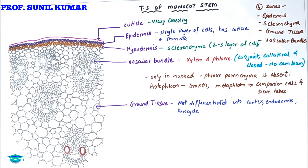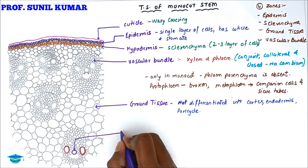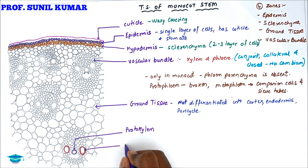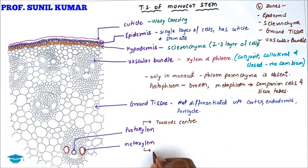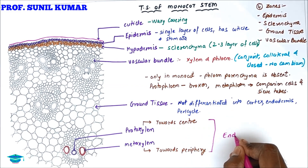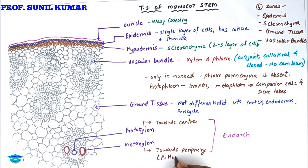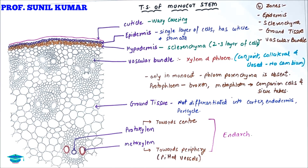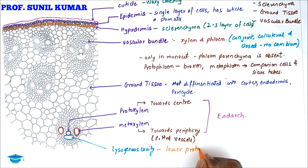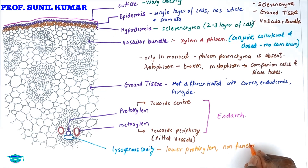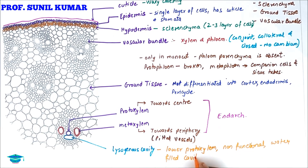The vascular bundle has a protoxylem and a metaxylem. Protoxylem is towards the center and metaxylem is towards the periphery. The metaxylem has pitted vessels, and this kind of arrangement is called the endarch condition — protoxylem towards center and metaxylem towards periphery. Below this there is a lysogenous cavity, present lower to the protoxylem; it is non-functional and is a water-filled cavity. Below the lysogenous cavity there are sclerenchyma cells.